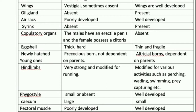For air sacs — which are part of the respiratory system along with the lungs — in Ratitae the air sacs are poorly developed, but in Carinate they are very well developed.